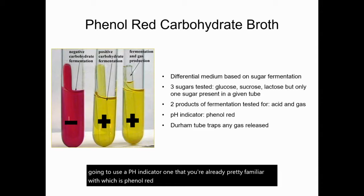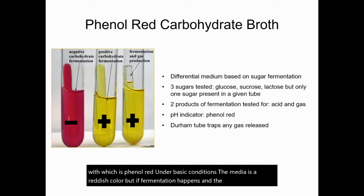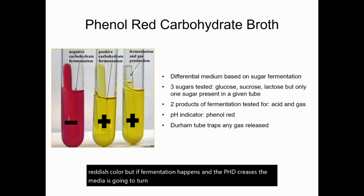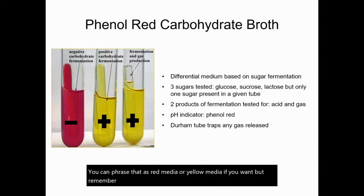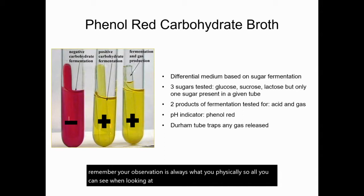Under basic conditions, the media is a reddish color, but if fermentation happens and the pH decreases, the media is going to turn yellow. So your observation options for this media are red broth or yellow broth. You can phrase that as red media or yellow media if you want, but remember your observation is always what you physically see — so all you can see when looking at this picture is the color of the media.